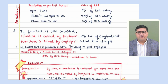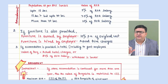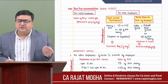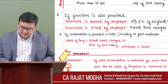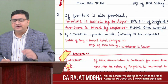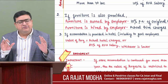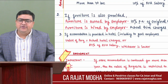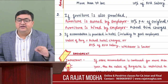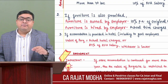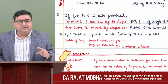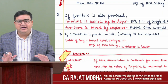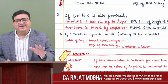If accommodation is provided in a hotel, for all employees - government or non-government - it is actual hotel charges or 24% of RFA salary, whichever is lower. There is no amendment here. Also, if accommodation is provided for not more than 15 days when an employee is transferred, it is an exempt perquisite. If provided for more than 15 days - say 16 days - the entire 16 days become fully taxable, not just the excess over 15 days.